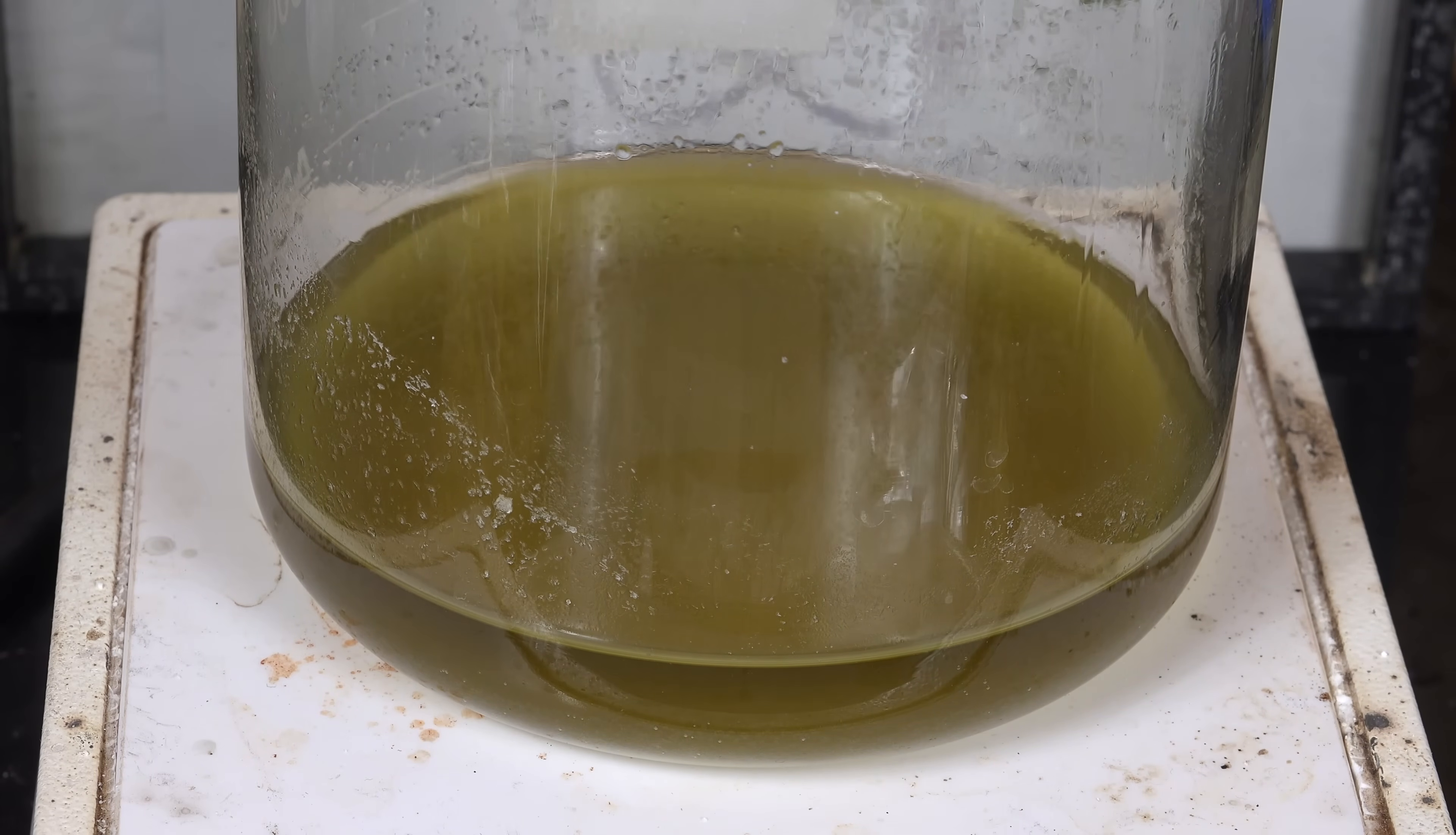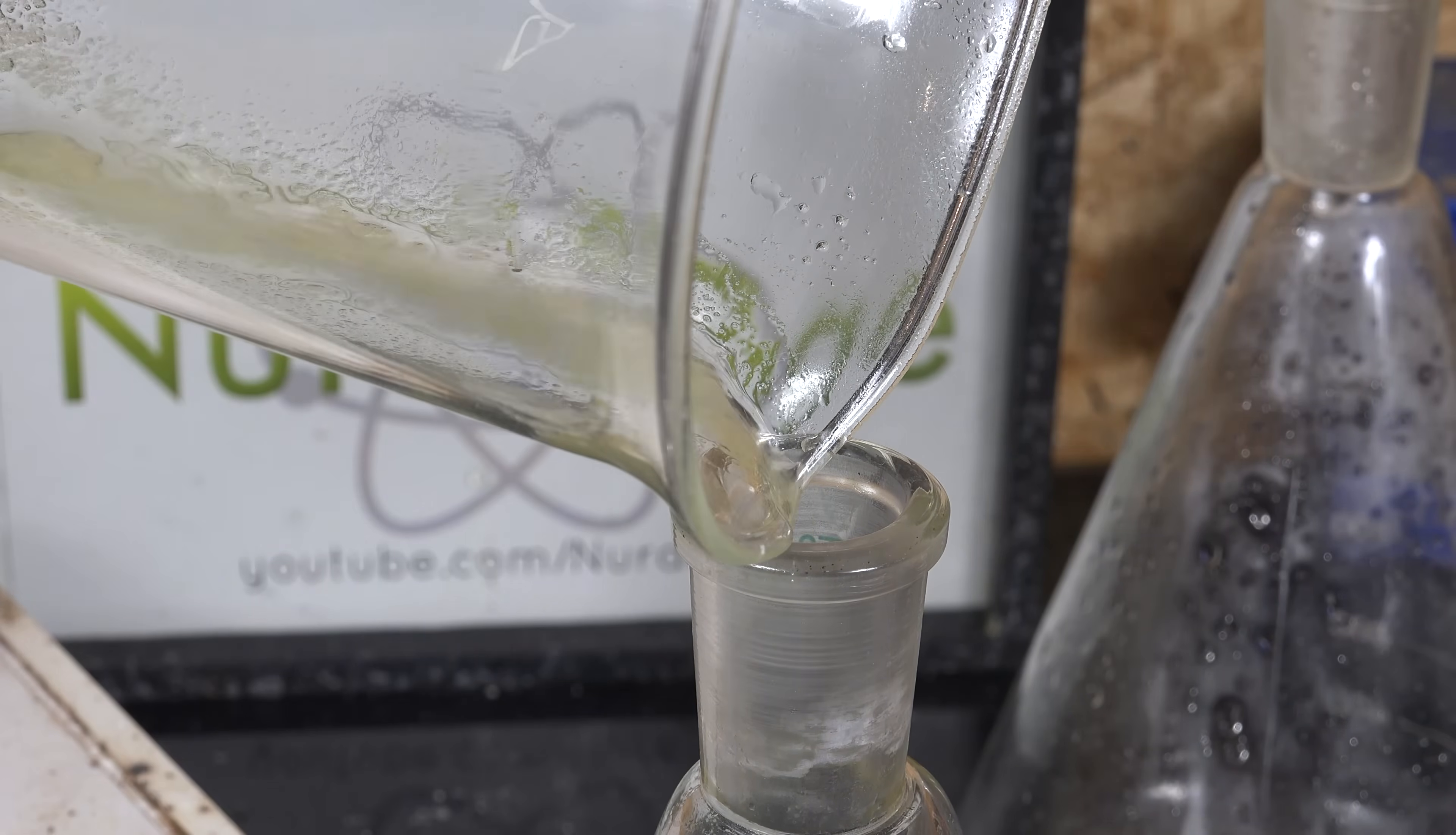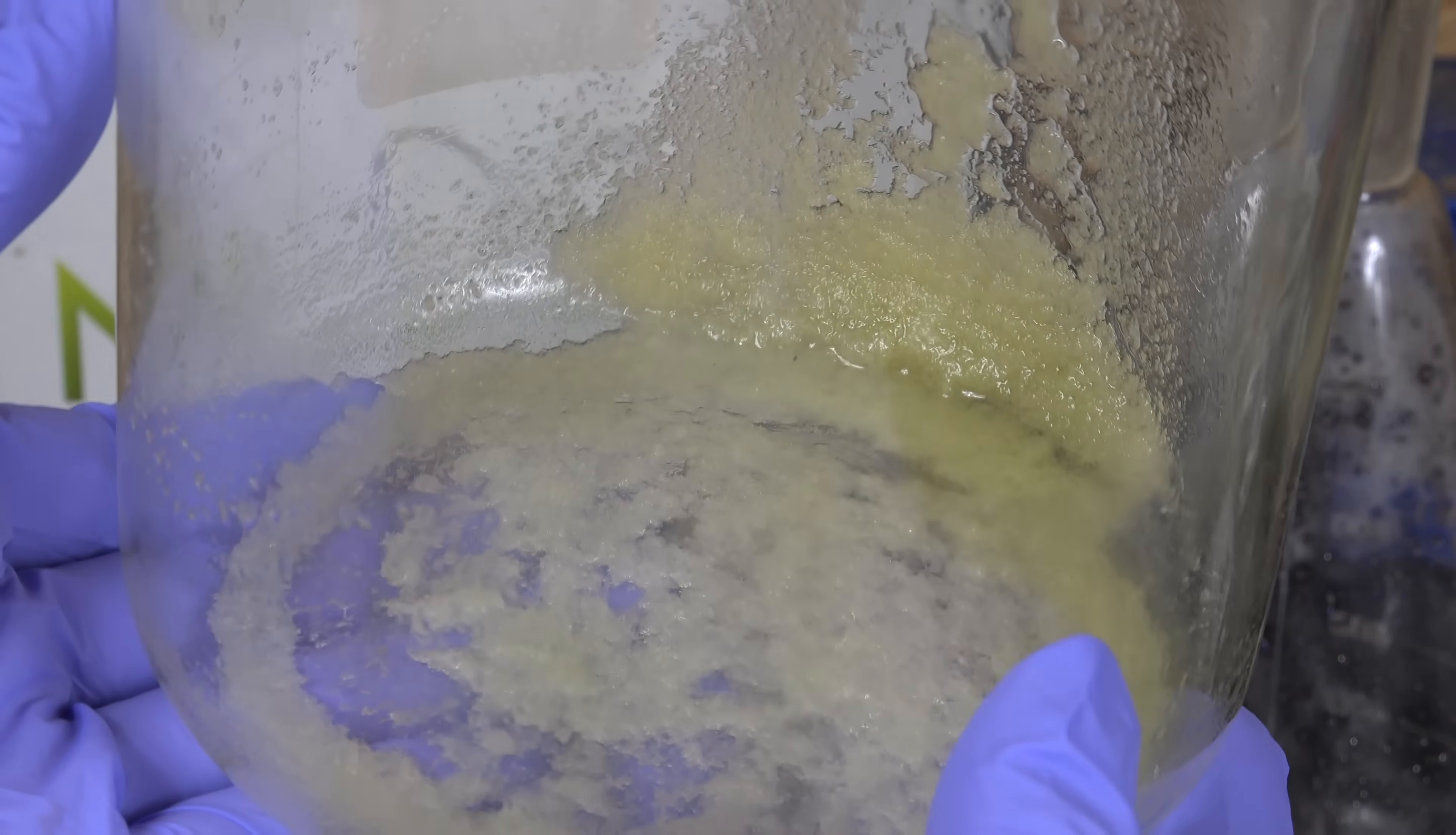The unreacted iron sulfate is much less soluble in the sulfuric acid solution so it crystallizes out. We then decant that into a new flask and you can see here the iron sulfate. We need to remove this so it won't bump when we distill the sulfuric acid.